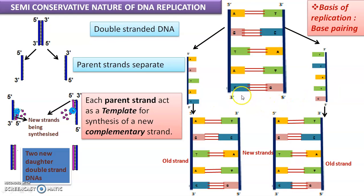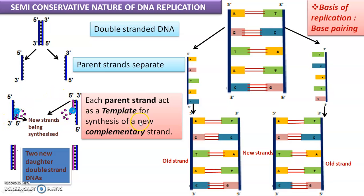Though the strands appear to open all at once, they actually open portion by portion, which will be covered in the next video on how replication occurs. Several proteins are involved in replication. DNA polymerase always synthesizes the new strand in the 5' to 3' direction only, so on both original strands it reads from the 3' end. The basis of semi-conservative replication is the complementary base pairing rule.